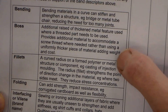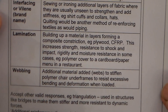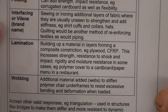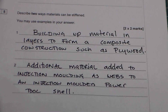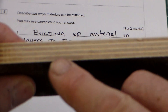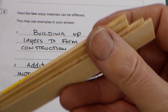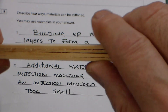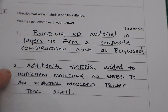The mark scheme gives examples including bending, a boss, fillets, folding, interfacing, lamination, and webbing. We're going to pick lamination and webbing for our answer. Lamination means building up material in layers to form a composite construction, such as plywood. If we took pieces of pine and glued them together with PVA glue and clamped them, they would become much more stiffened — they would become laminated. That gives us two marks.